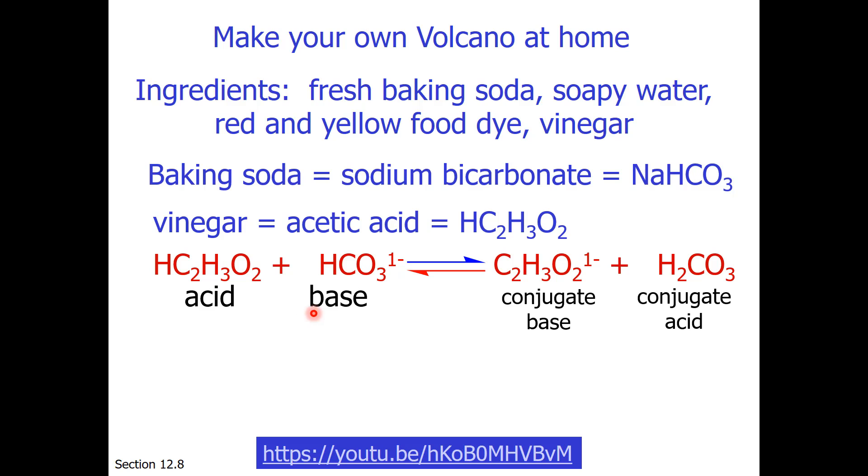Acetic acid reacts with hydrogen carbonate to give us acetate and carbonic acid. The equilibrium constant for this reaction has the Ka of the acetic acid over the Ka of our produced acid, which is carbonic acid. You can see that it's got an equilibrium constant that favors product, but why, when you do this, does it react so extensively?